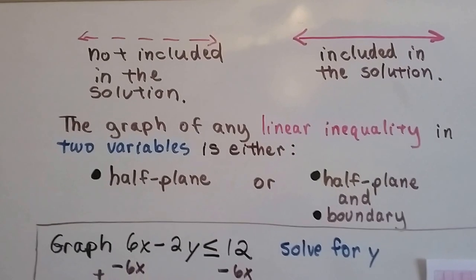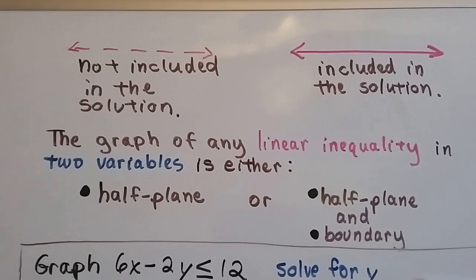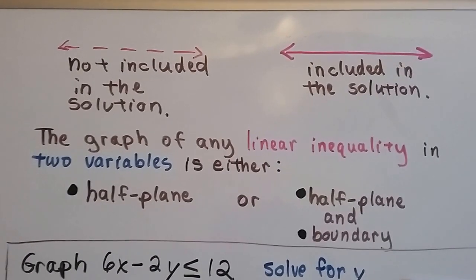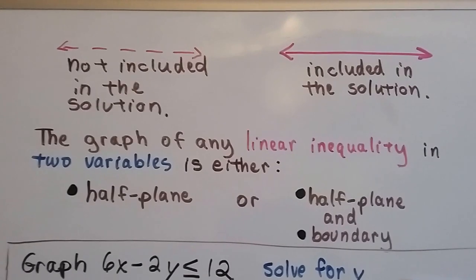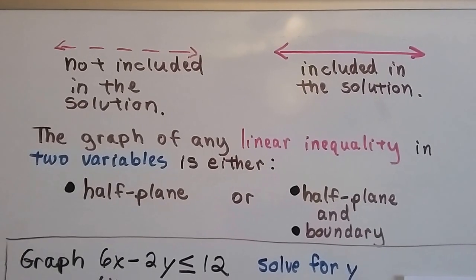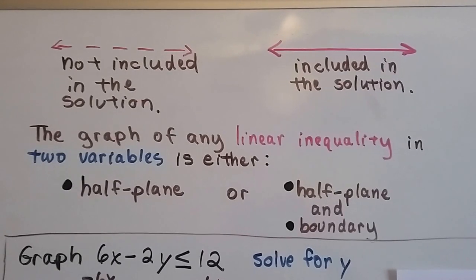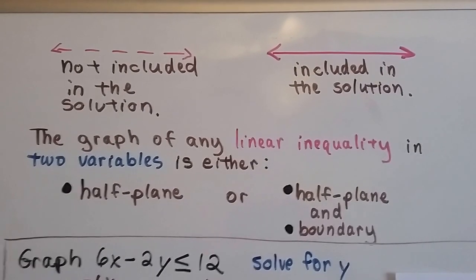So, if it's a dashed line, it's not included in the solution. If it's a solid line, that means it is included in the solution. All the points on that line are included in the solution. And the graph of any linear inequality in two variables is either a half-plane or the half-plane and the boundary included.